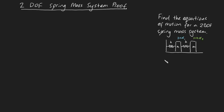Let me draw the free body diagram of this first mass and find the forces acting on it. If this mass has moved a distance x1 from its equilibrium position, that means that this spring will be exerting a force on it to the left, which will be kx1.